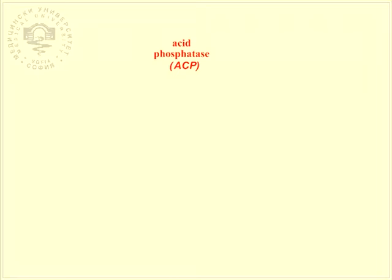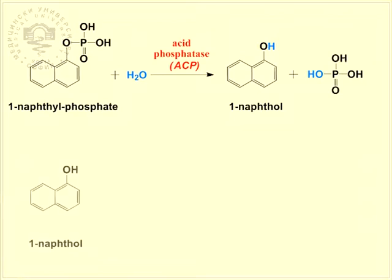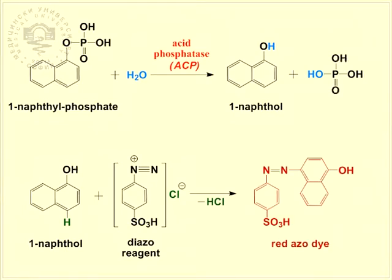The acid phosphatase catalyzes the hydrolysis of 1-naphthyl phosphate to 1-naphthol and phosphate. This enzyme is a phosphomonoesterase — it catalyzes only the hydrolysis of monoesters of phosphoric acid. The 1-naphthol obtained interacts with a diazo compound and is converted to a red azo dye.